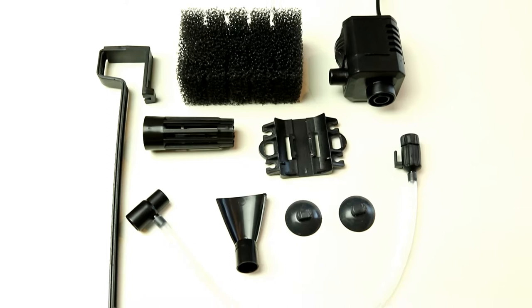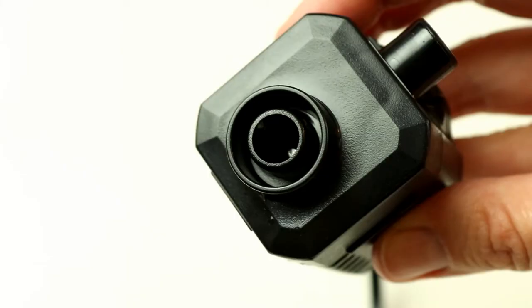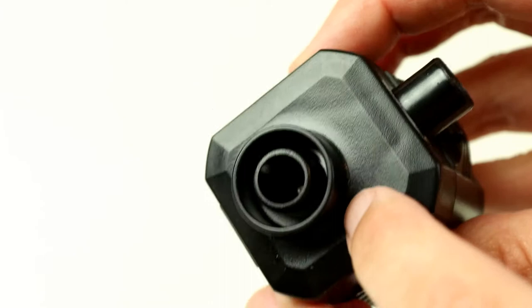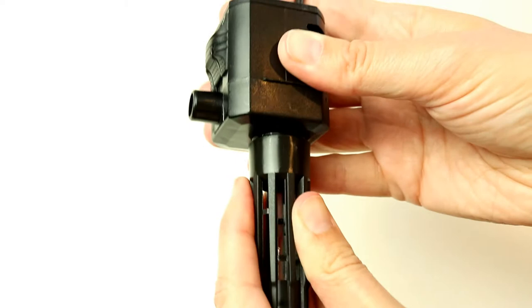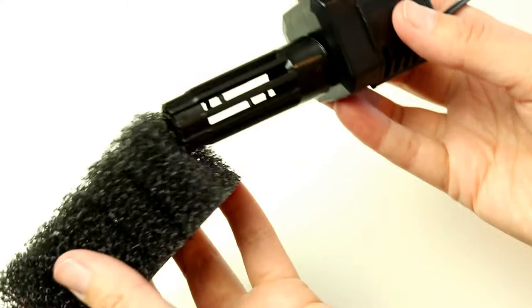So first of all how does it work? Well it has a tiny internal motor with an impeller inside this compartment. This draws water in through the base which you can then fit a sponge over for filtration and for preventing your fish or shrimps from getting sucked up into the filter.